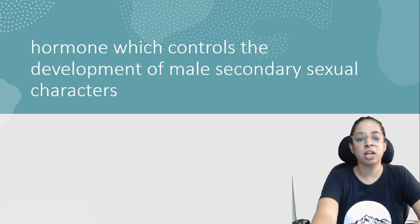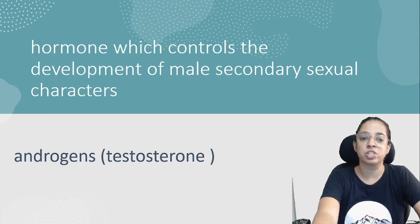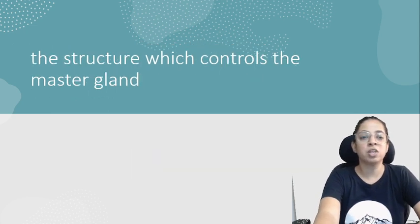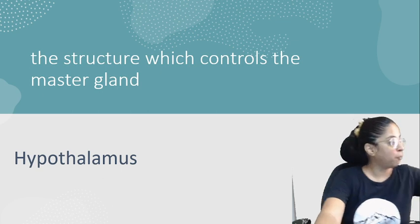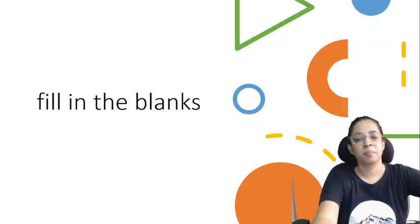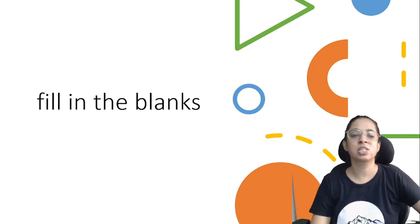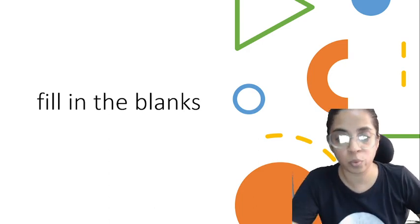Next: the hormone which controls the development of male secondary sexual characters — androgens, and to be specific, testosterone. The structure which controls the master gland — that is the hypothalamus. Very good, students!